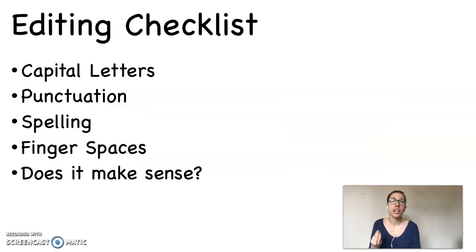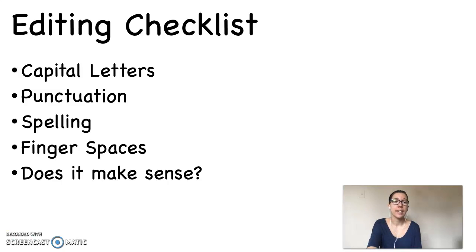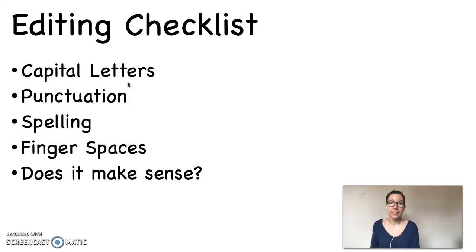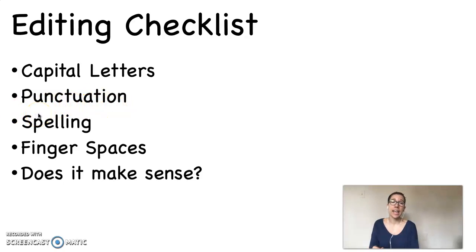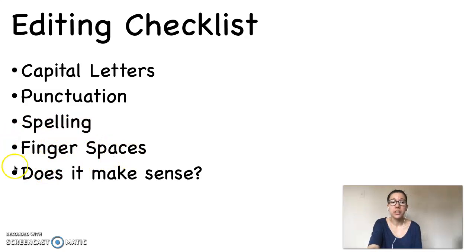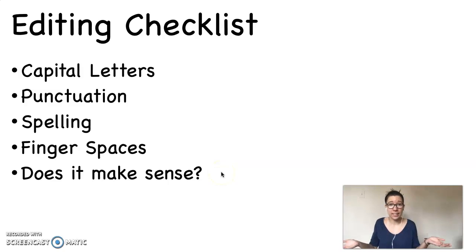First let's take a look at our editing checklist. The first thing on our editing checklist is capital letters. Capital letters always come at the beginning of a sentence and the names of people and places. We'll also be looking for punctuation — that means we need something at the end of our sentence to indicate that the sentence is over. We'll also be checking our spelling, our finger spaces, and last but not least we'll be checking to see if our sentence makes sense, which is maybe the most important part of editing.